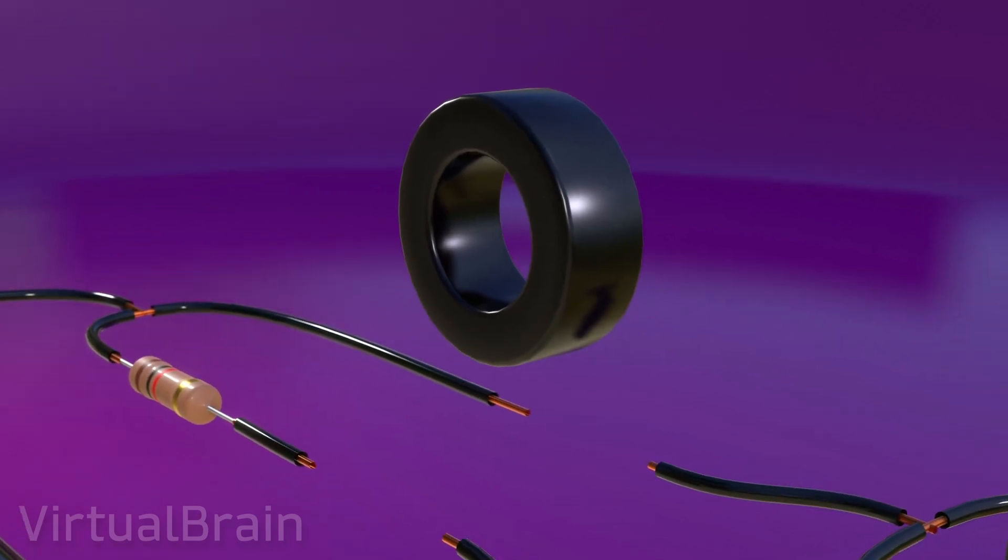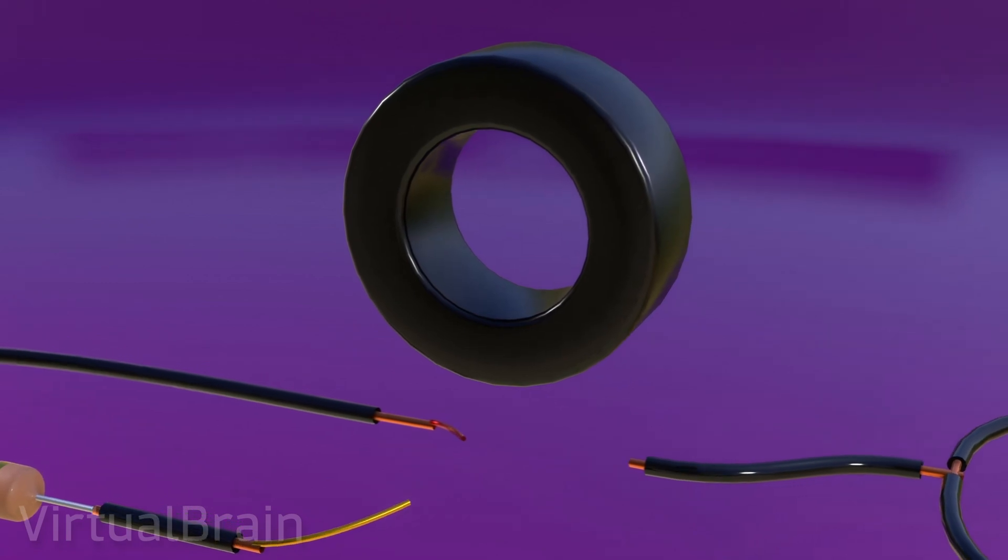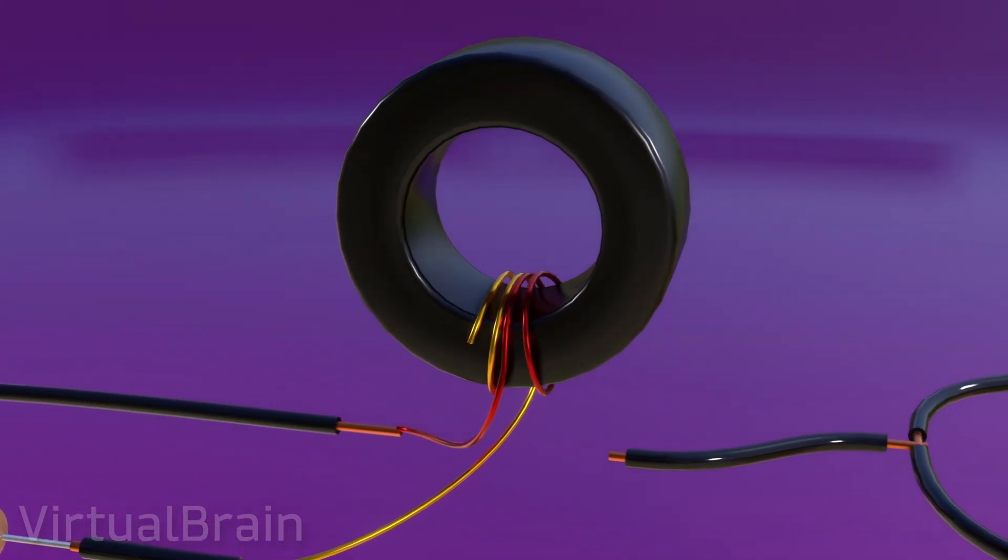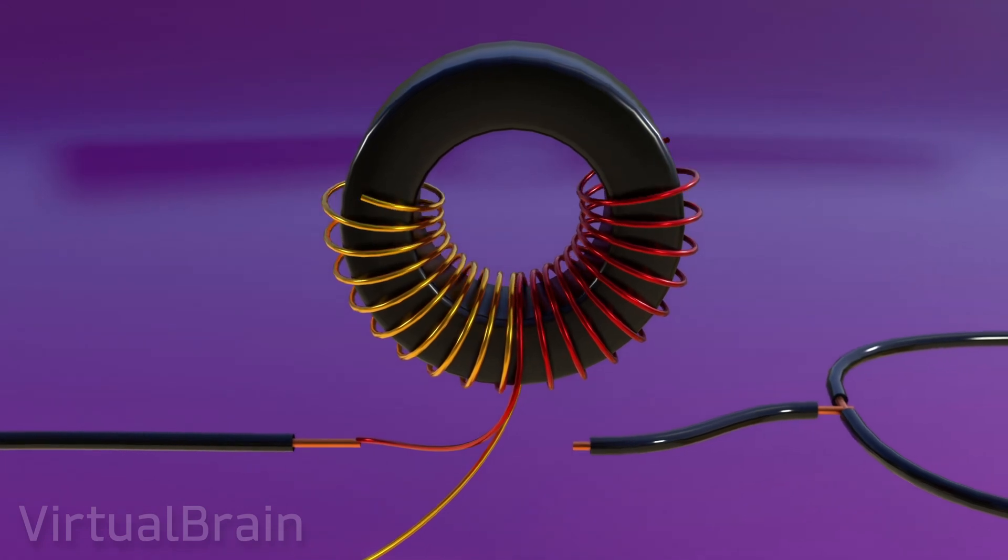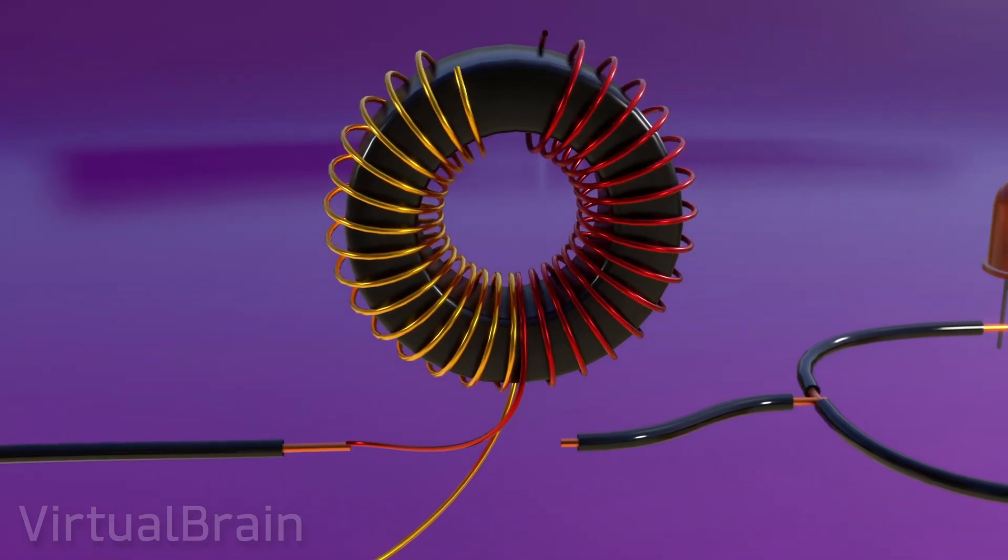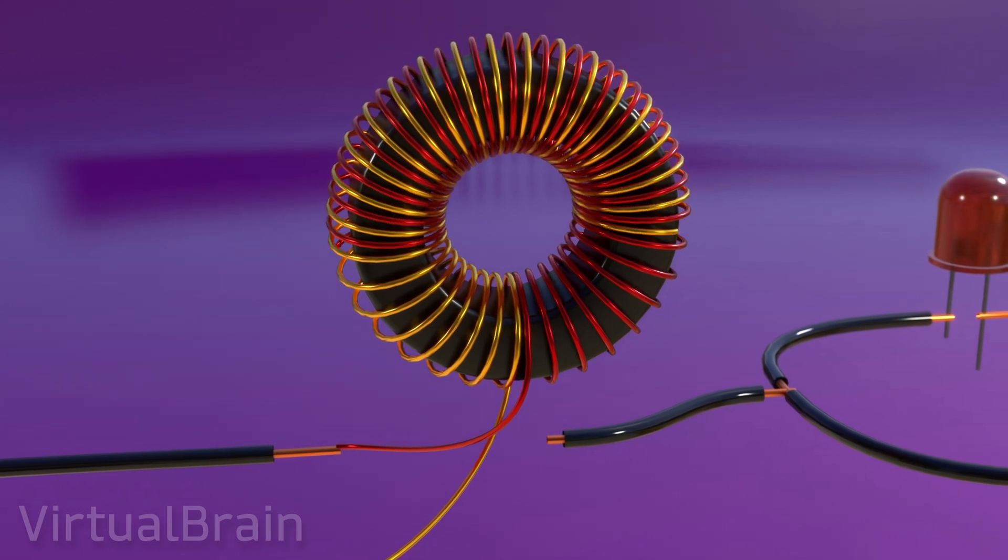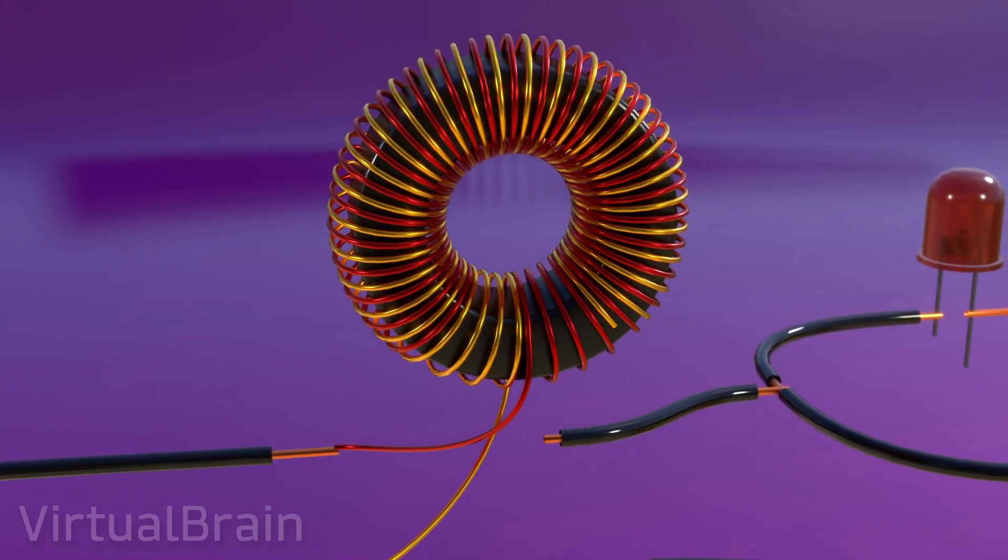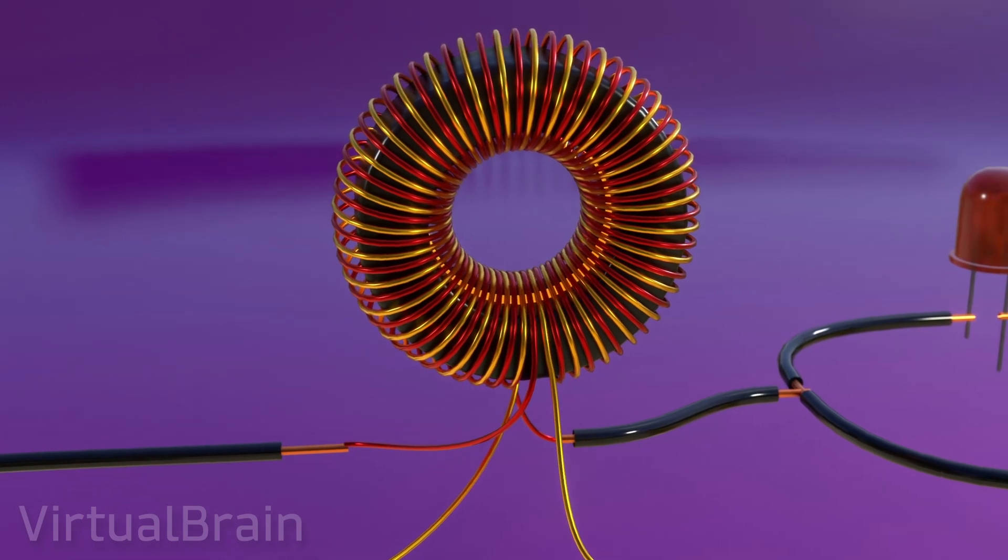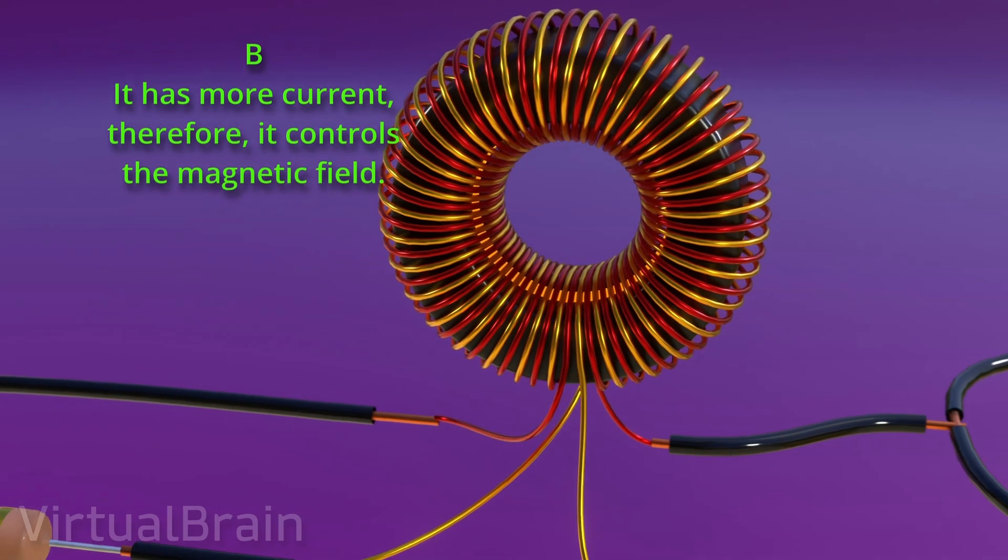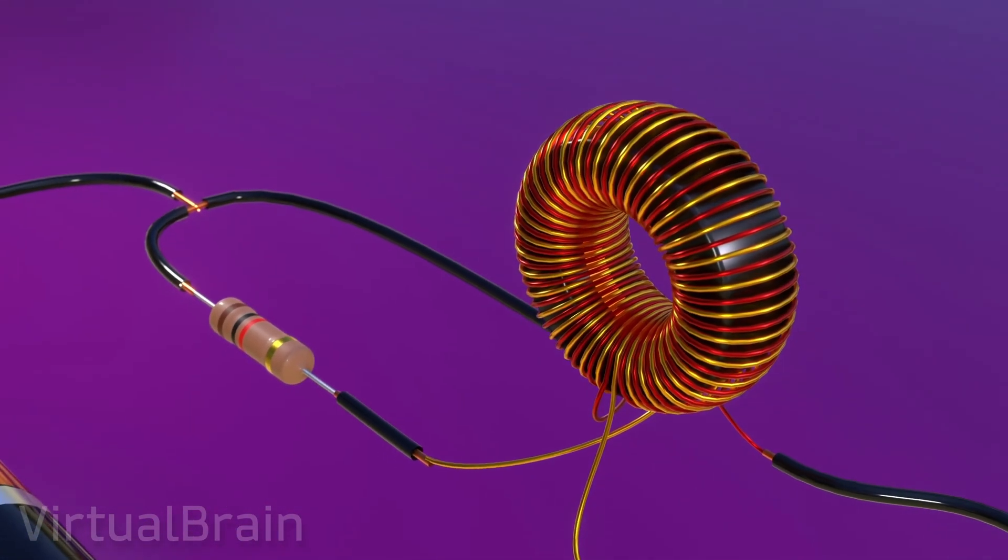While we already looked at what the behavior of a bifiler toroidal inductor was, the way this is connected in a Joule thief is also of great importance. In particular, the construction of the toroidal coil is made in such a way that the current passes through it in opposite directions with respect to each other, and because of this, the voltage induced in both wires by the varying magnetic field will also have opposite directions. Furthermore, since most of the current passes through path B, this path will be the one to control the behavior of the magnetic field.